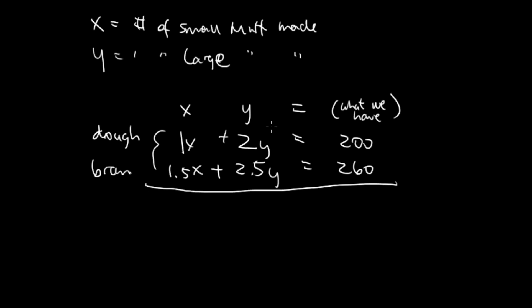From here we're going to solve these two equations. I'm going to take equation 1 times negative 1.5. I'm going to use the elimination method here. This is going to be negative 1.5x plus negative 3y equals negative 300.